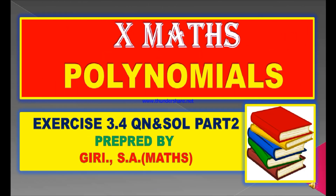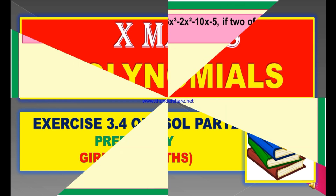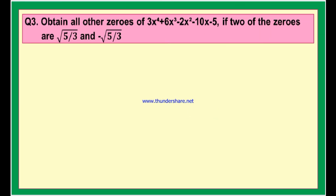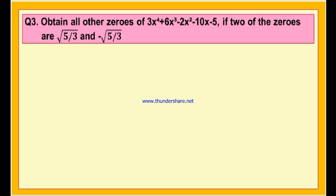Hi, hello, this is Gary teaching 10th Mathematics, the chapter Polynomials. Here are the questions and solutions from exercise 3.4 and this is part 2 video. In this video, we will learn the solutions of question number 3 and question number 4. Here is question number 3: obtain all other zeros of 3x⁴ plus 6x³ minus 2x² minus 10x minus 5, if 2 of the zeros are √(5/3) and -√(5/3).